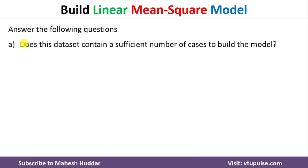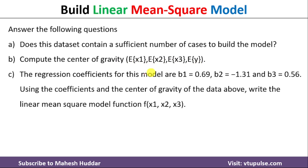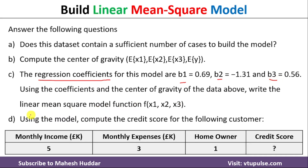Given this particular dataset, we need to answer the following questions. First, does this dataset contain a sufficient number of cases to build the model? Second, compute the center of gravity — that is E of x1, E of x2, E of x3, and E of y. Third, given the regression coefficients b1, b2, and b3, we need to find the linear mean square model. Once we have the model, we need to find the credit score for a customer with monthly income equal to 5, monthly expenses equal to 3, and homeowner equal to 1.